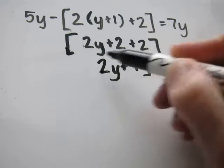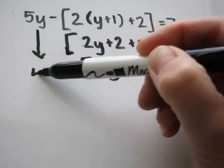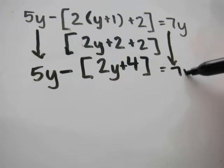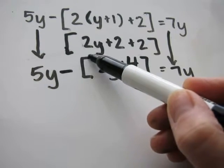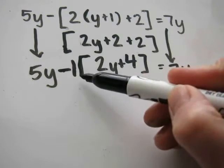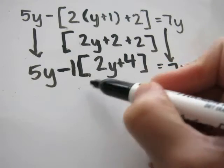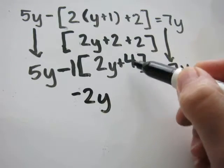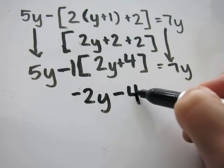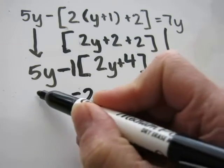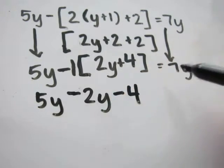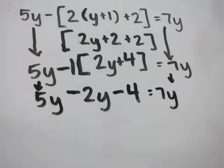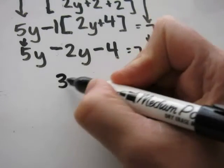So we've got 2y plus 4. Carry down the 5y minus and carry down the equals 7y. Now we're subtracting. It's the same as having a ghost number of negative 1. So negative 1 times 2y. Negative 2y. Negative 1 times 4. Negative 4. So subtract 4. Continue to carry the 5y down and the equals 7y down. 5y minus 2y is 3y.